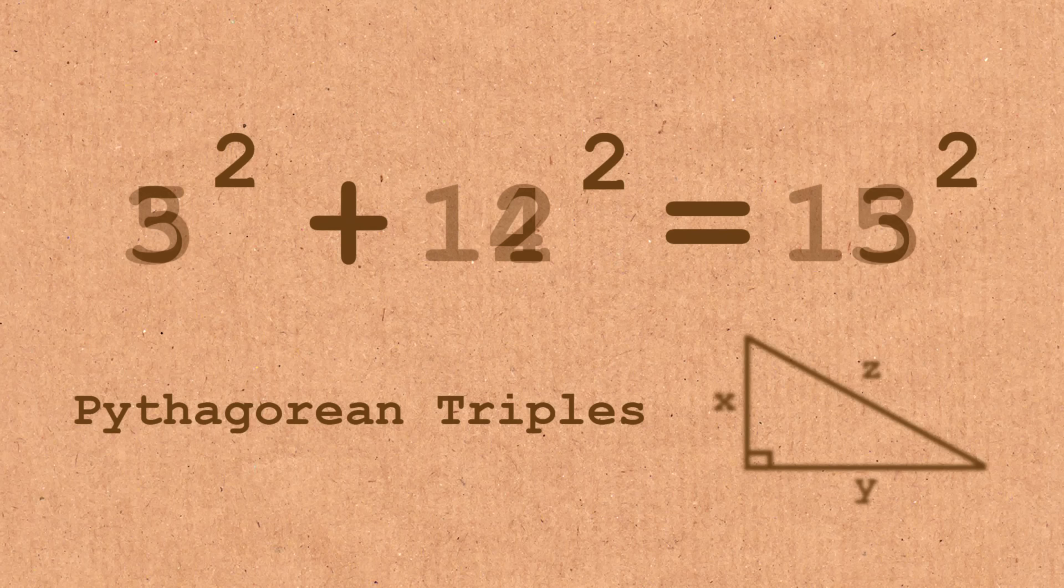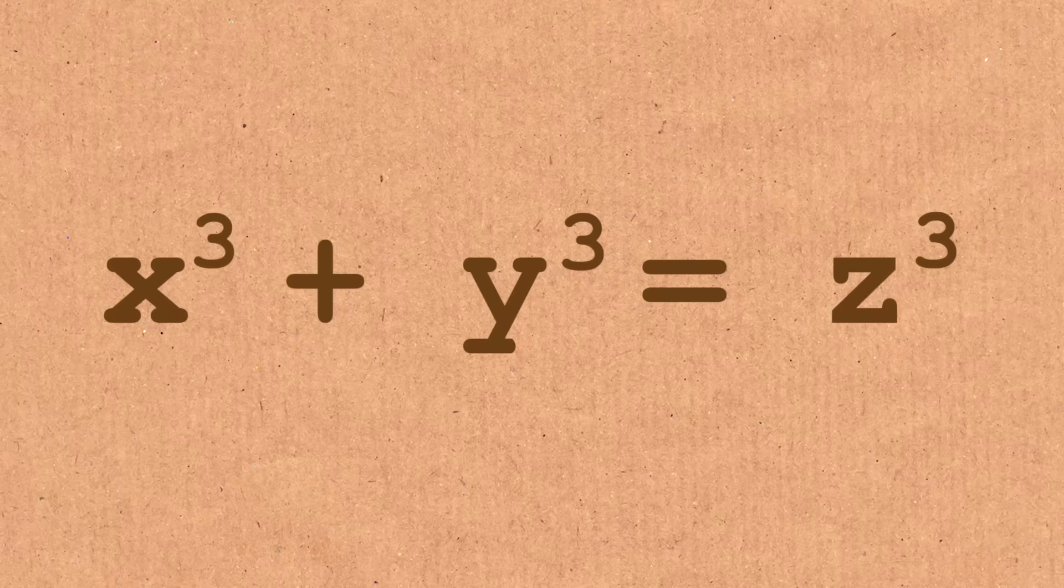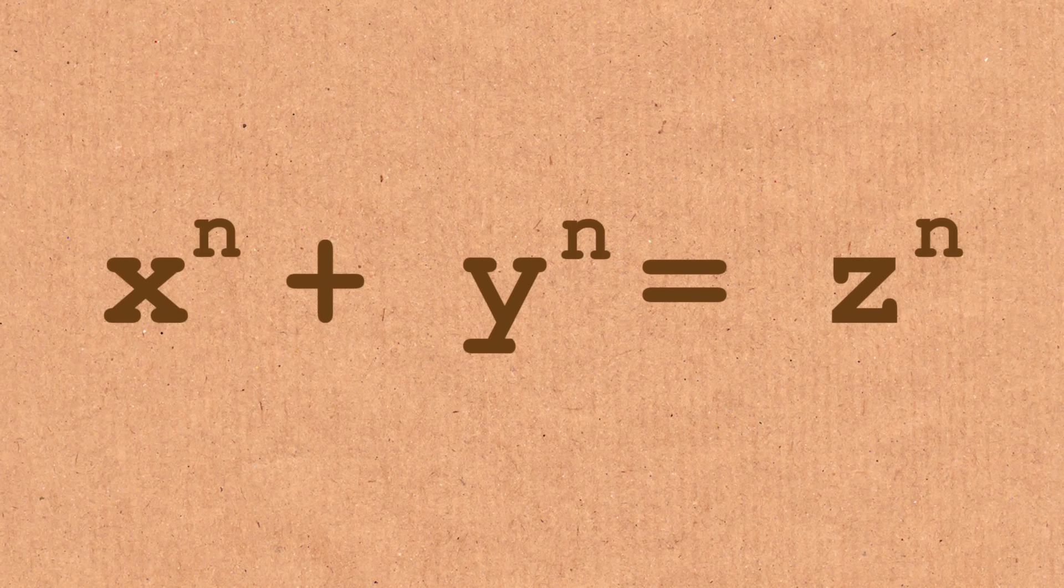So this is kind of weird, because we have one equation, x squared plus y squared equals z squared, that has not just one solution, it actually has an infinite number of solutions. And then you have an infinite number of equations, x cubed plus y cubed equals z cubed, x to the fourth plus y to the fourth equals z to the fourth, an infinite number of equations which apparently have no solutions.